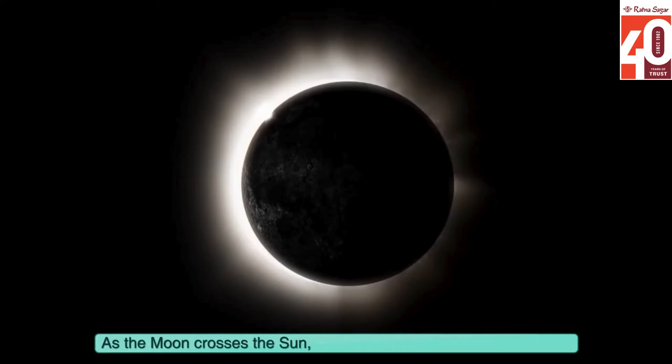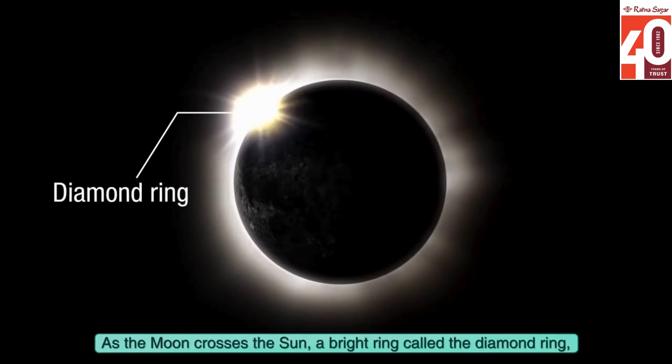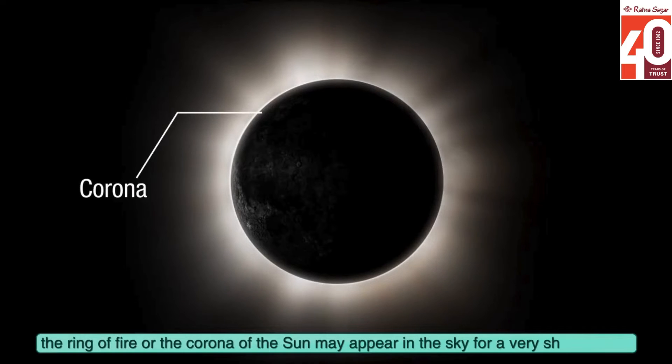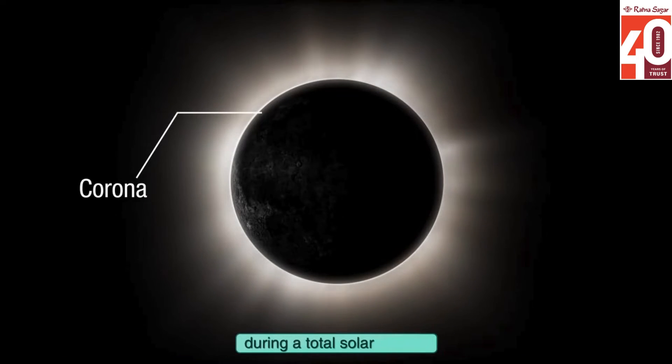As the moon crosses the sun, a bright ring called the diamond ring, the ring of fire, or the corona of the sun may appear in the sky for a very short period during a total solar eclipse. A total eclipse lasts for about seven and a half minutes.